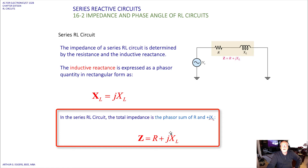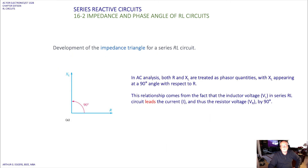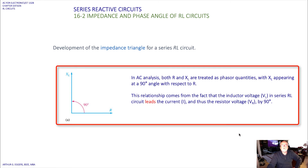In the capacitive circuit we had a negative relationship for XC. The development of the impedance triangle for a series RL circuit shows the relationship between XL and R.